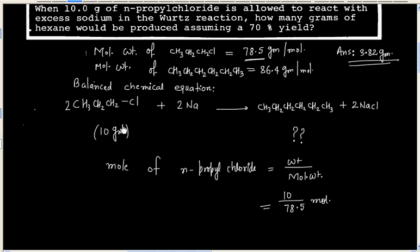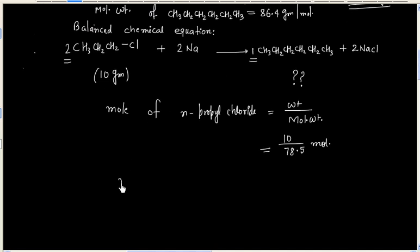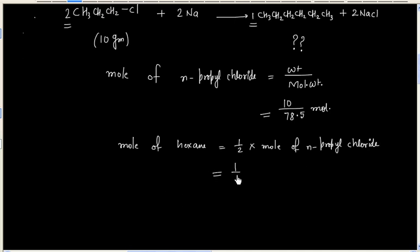Now, we can use equation to find mole of hexane. Two mole of n-propyl chloride gives one mole of hexane. So, mole of hexane is equal to one-half times ten by 78.5.